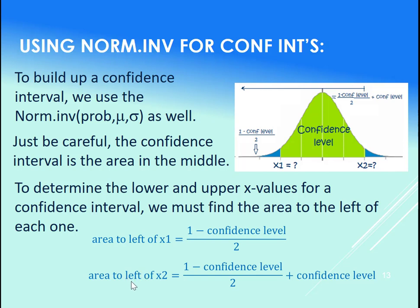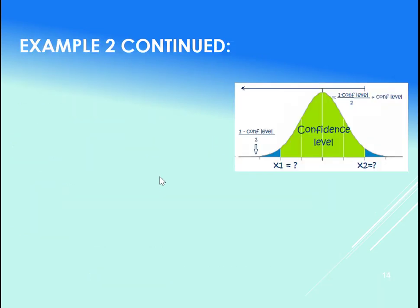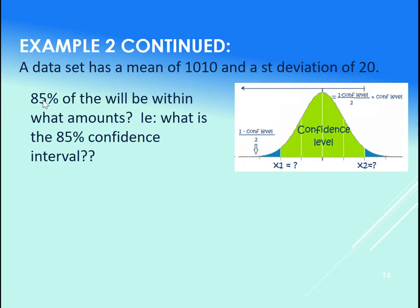Let's try this out with an example here. So example 2 continued. So let's say, again, we're trying to build up a confidence interval, but now we have a mean of 1,010, standard deviation of 20. And we want to know 85%, or the 85% confidence interval, if you will, or 85% of the data will be between.